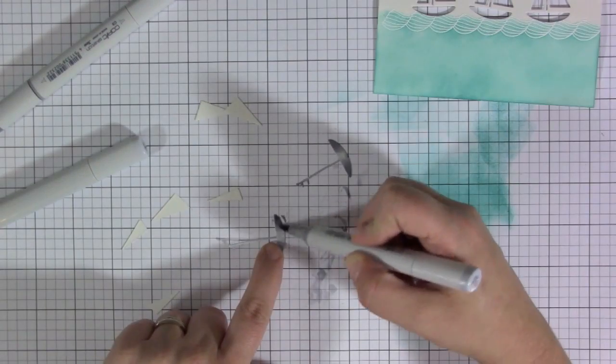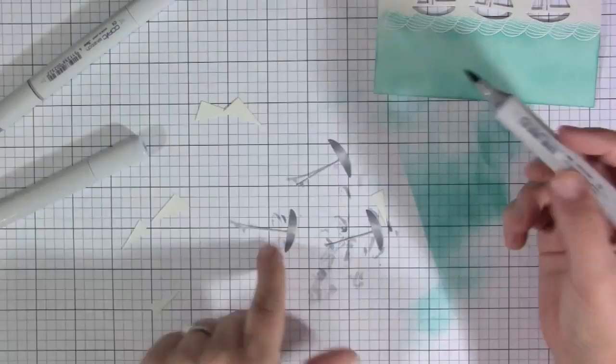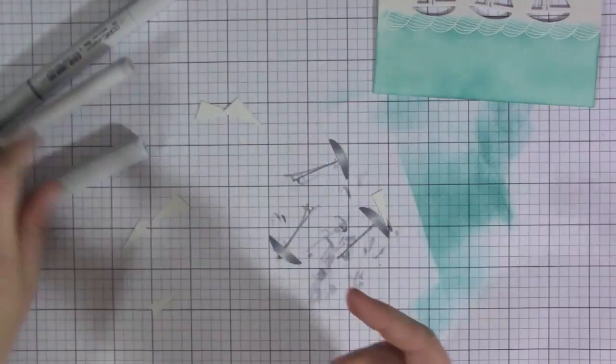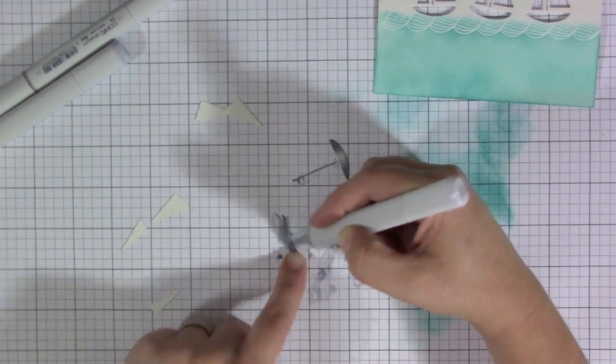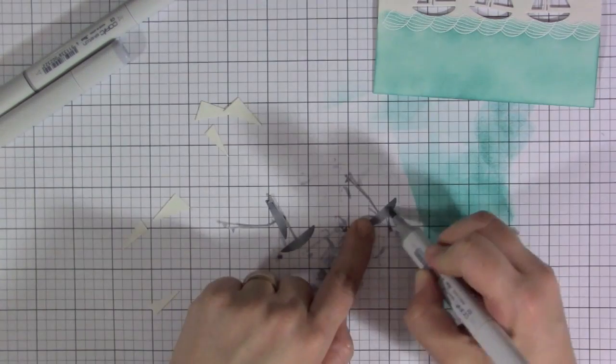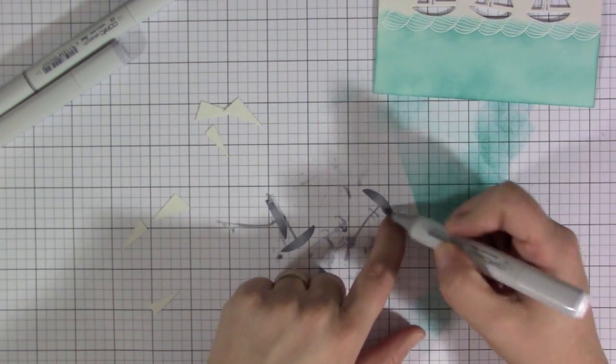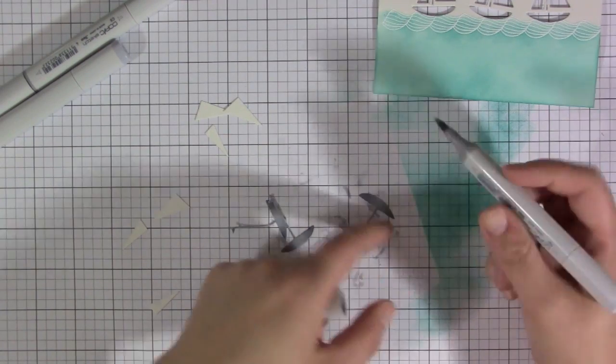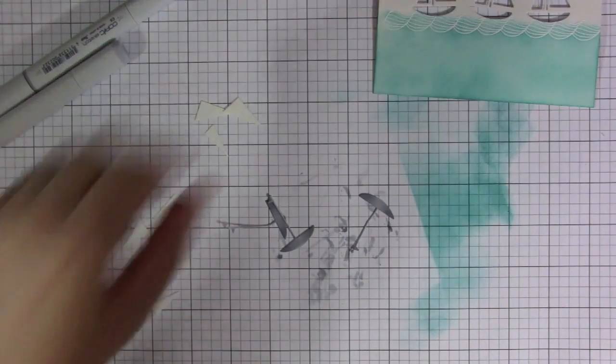I'm just using some gray colors here to do the main part of the boat, the bottom and then the little mast arm that sticks up. I just started with my lightest color first and then just added some darker colors as I went, just to give it a little bit of shading so it didn't look super flat. I wanted a little bit of dimension with that coloring.